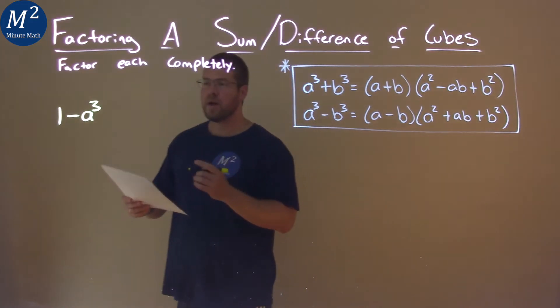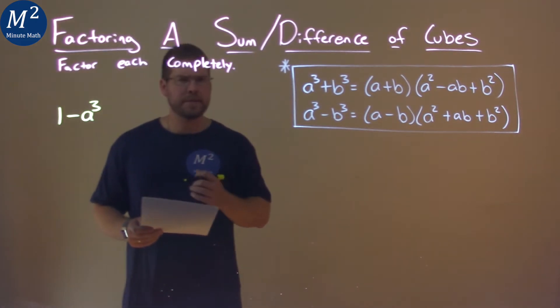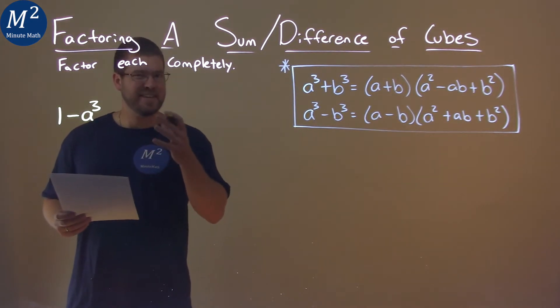We're given this problem right here: one minus a cubed, and we need to factor this completely. Well, to use the difference of cubes formula here, I have to write this as two parts, each part cubed.